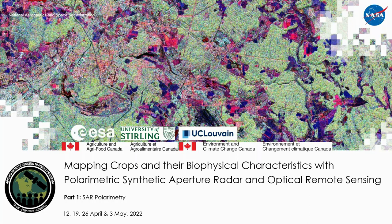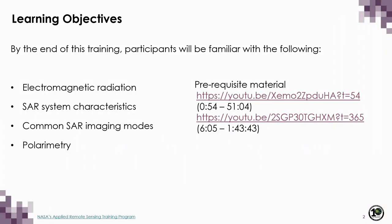In this lecture, I will focus on the theory of SAR polarimetry. We will cover four main topics: a short review of electromagnetic radiation, followed by a discussion of the system characteristics that define a SAR sensor, then some common SAR imaging modes, and finally polarimetry. To fully grasp the contents of this lecture, it is strongly recommended that you review the prerequisite material shown on the right-hand side of the screen.